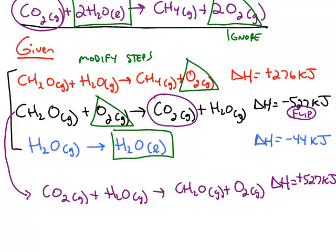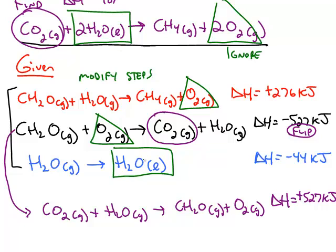So we ask those same two questions. Is it on the correct side of the arrow? And it's not. So we're going to have to flip step number three also. And is the coefficient correct? We want the coefficient to be a two. The step has a coefficient of one. So we have to flip it and multiply by two.